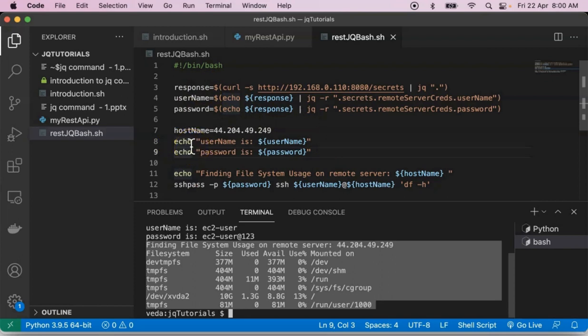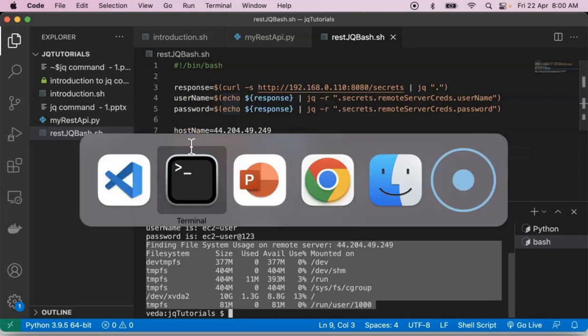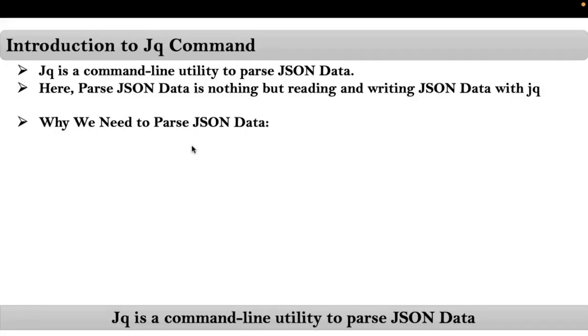Yes, we are getting the required information — file system usage — without hard coding username and password in the shell script. That is the usage of JQ command in real time. So finally, why do we need to parse JSON data? Simply to read or write our required data from the JSON data.